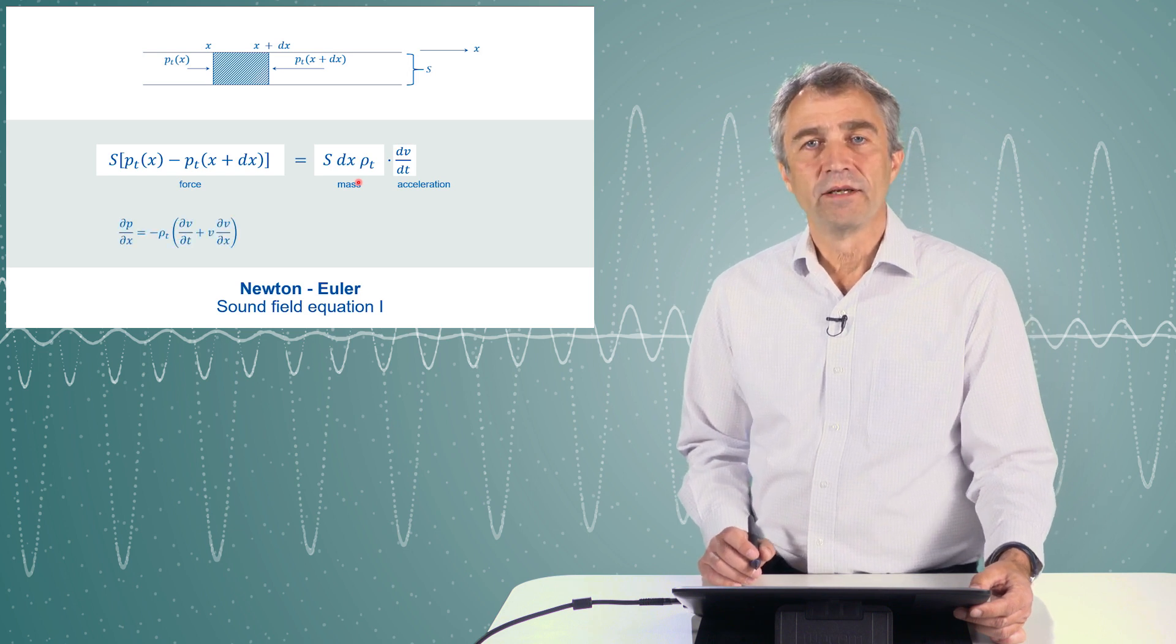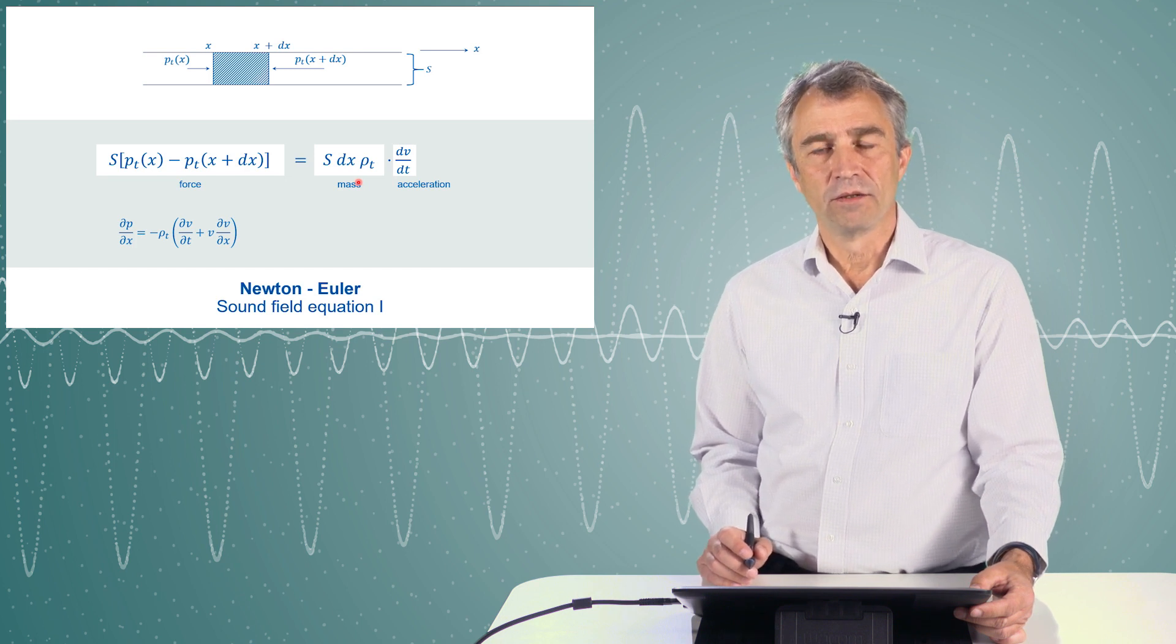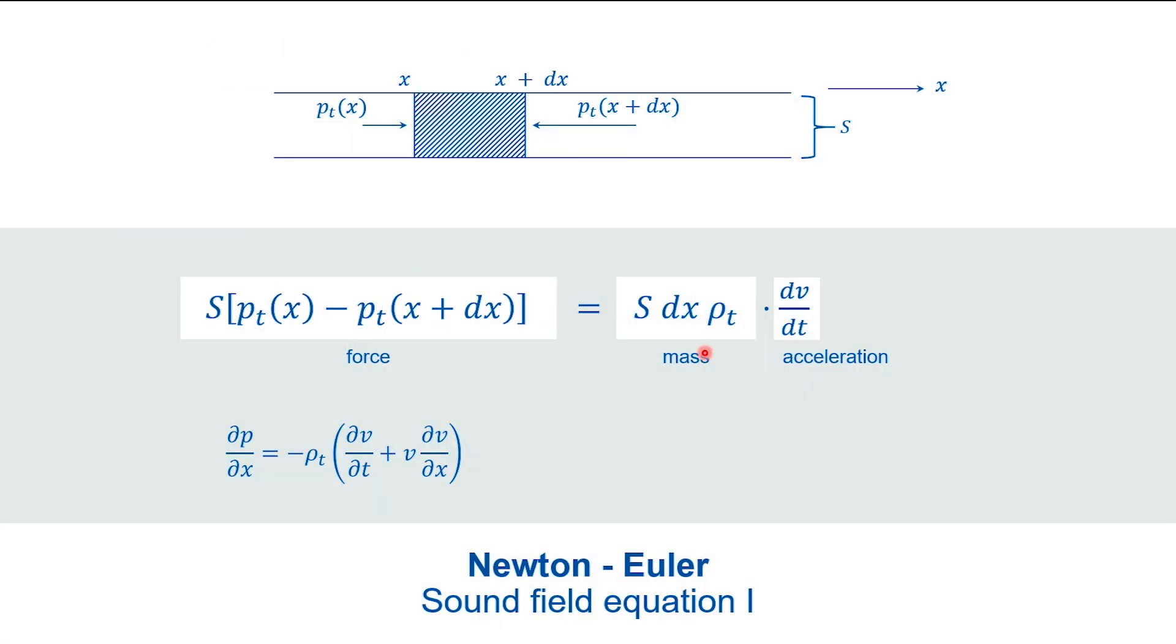This equation can now be transformed a little bit into a mathematically more compact form by going to very small differences dx, so we get this differential equation shown below. With certain approximations referring to assumptions of small effects, we can simplify this equation to this one, so the pressure gradient is equal to the density times the acceleration. The meaning is still force equals mass times acceleration.